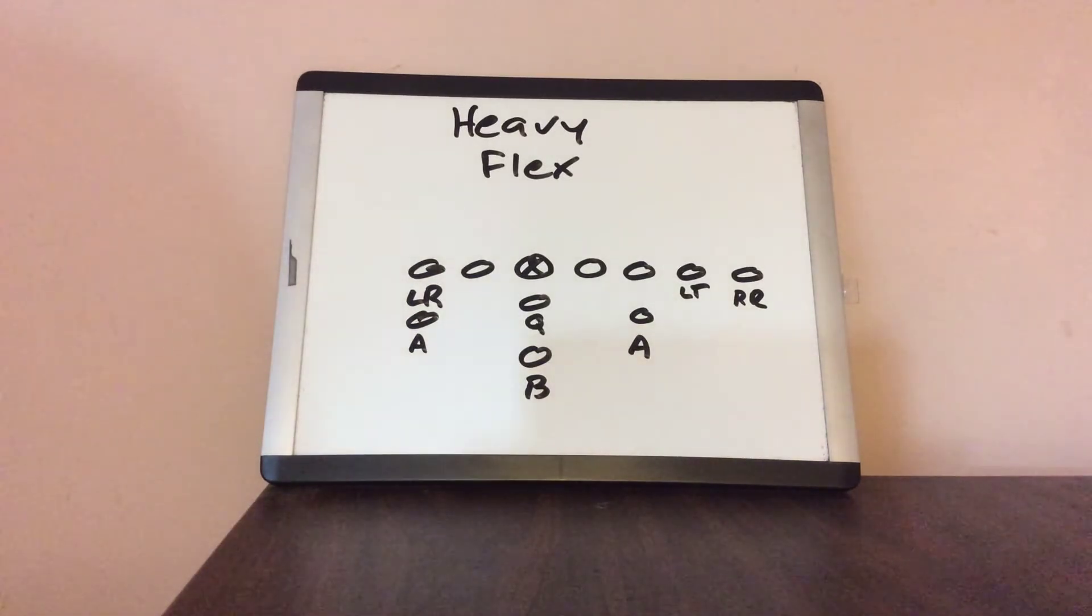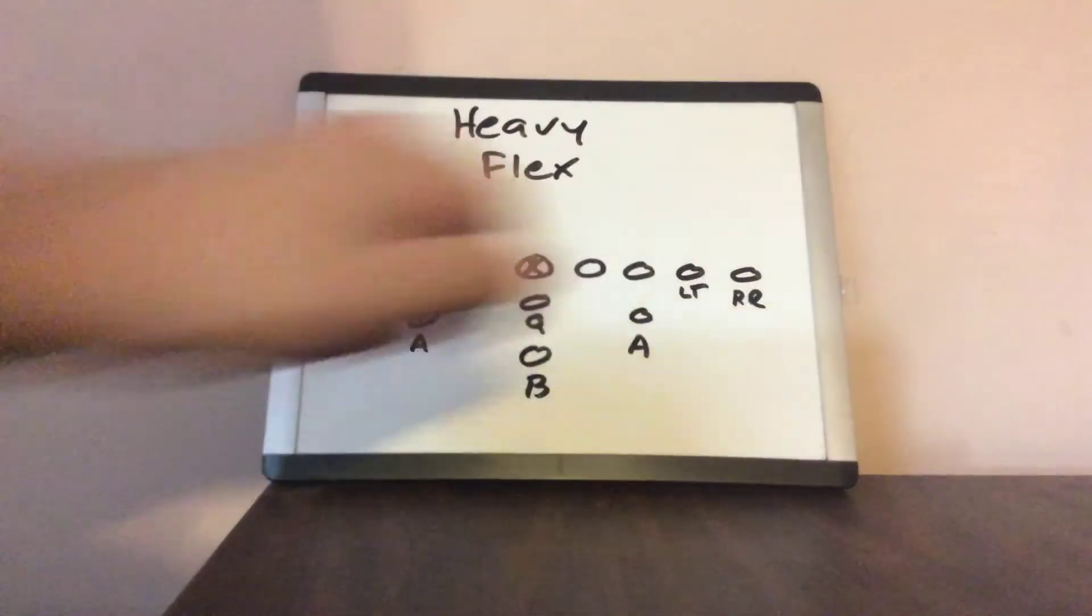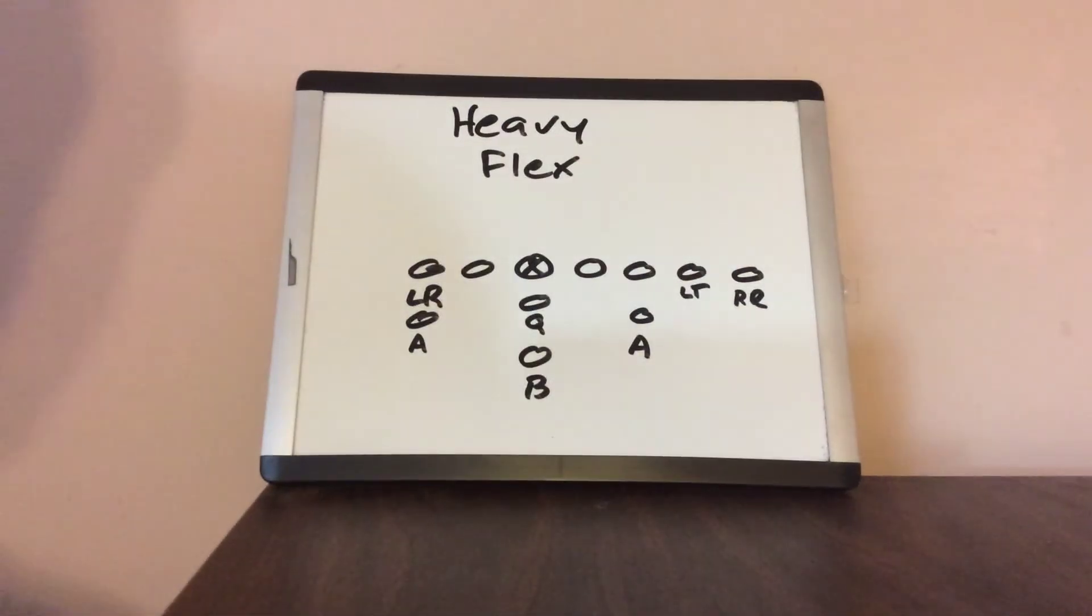The right receiver will align three and a half feet away from the heavy tackle with his outside foot up and his inside foot at 45 degrees. Nobody else changes.